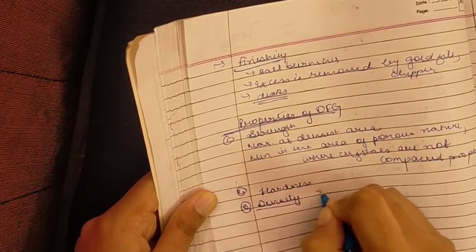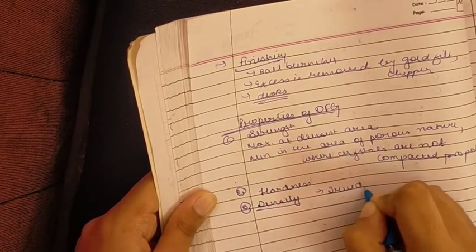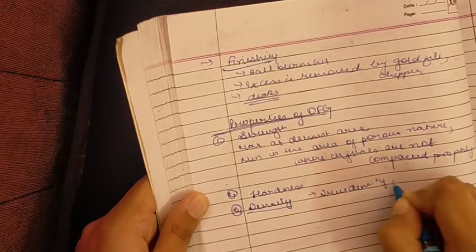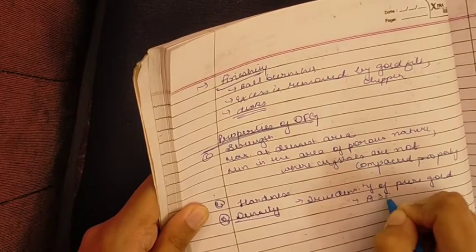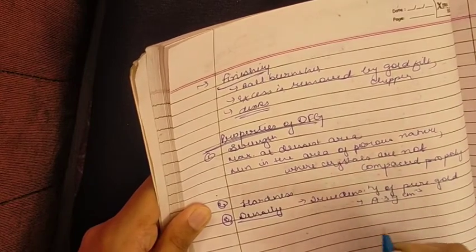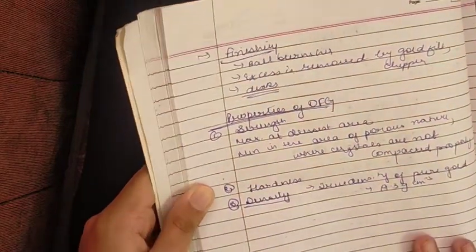In density, the true density of gold, of pure gold especially, is around 19.3 gram centimeter cube. But however, it is not reached in direct filling gold.